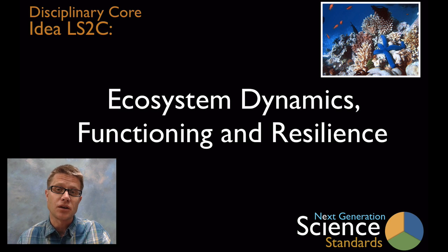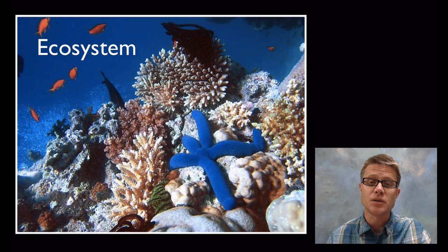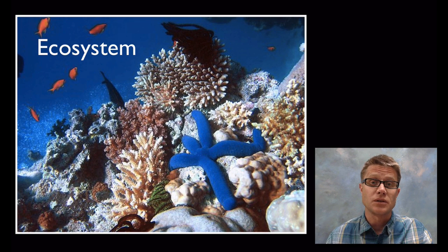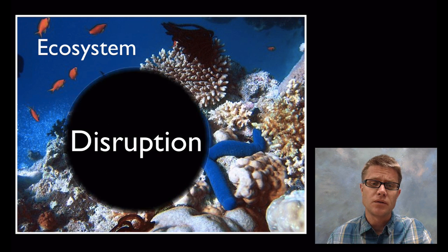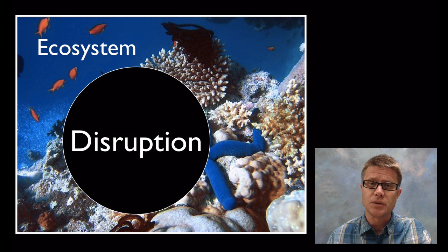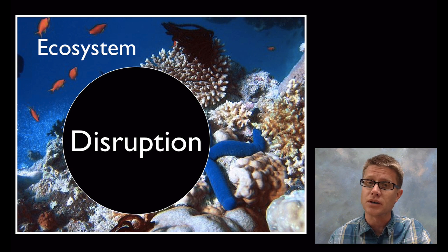If we look at something like a coral reef, it's an ecosystem made up of a lot of different organisms, but also nonliving material — the water, temperature, and chemistry. If you take an ecosystem like a coral reef and we disrupt it — by adding a change in temperature, chemistry, or introducing a new organism — you're going to change that ecosystem.